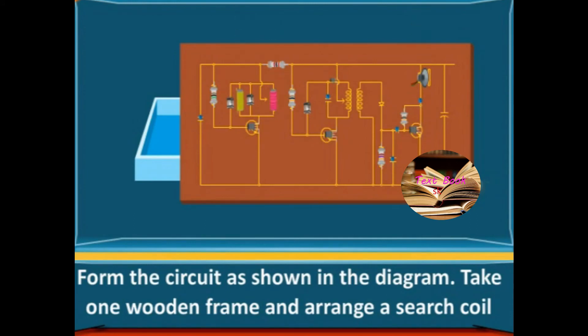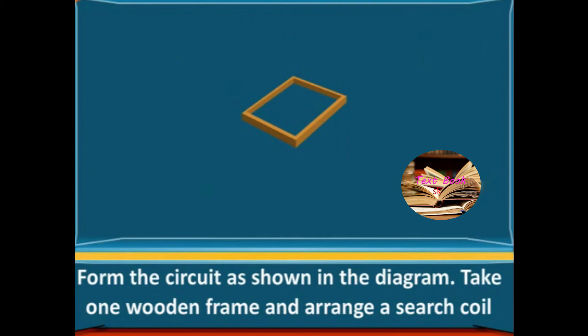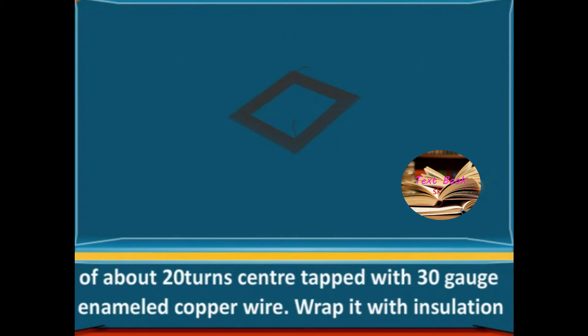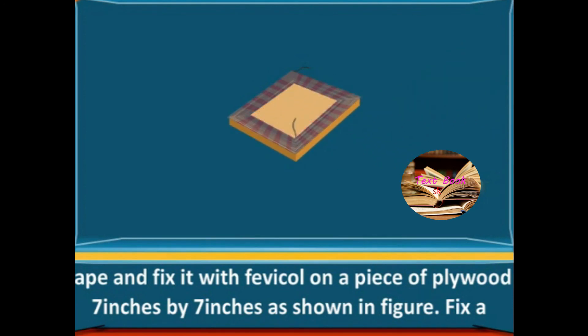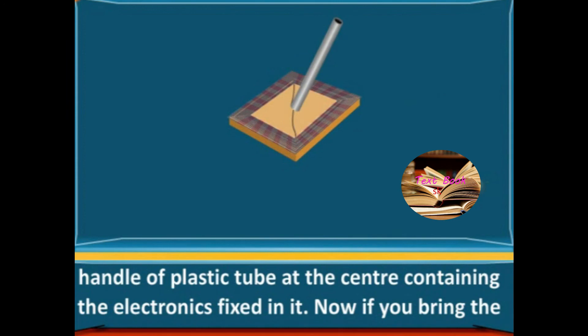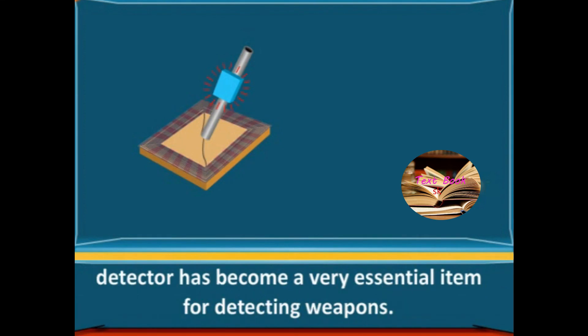Assemble the circuit by connecting the numbered connection points as indicated in the diagram, proceeding through points 1 through 20 in sequence.